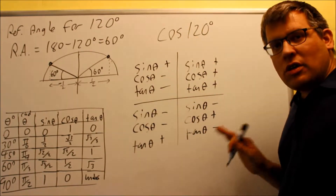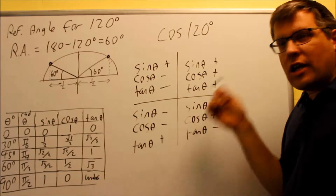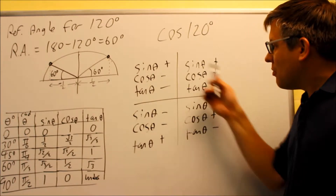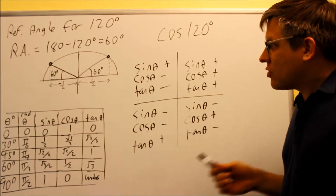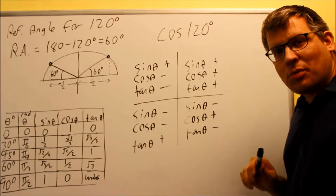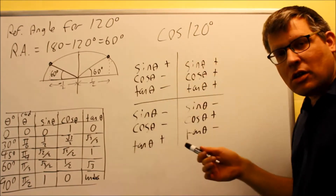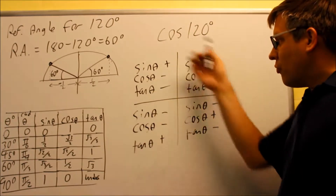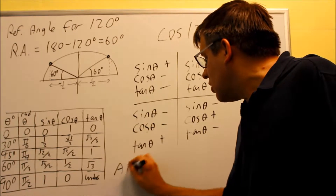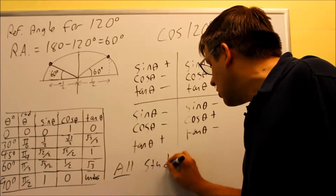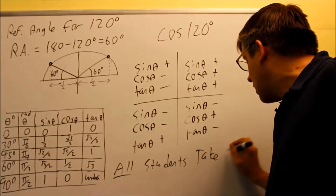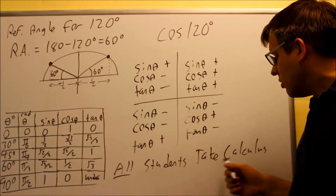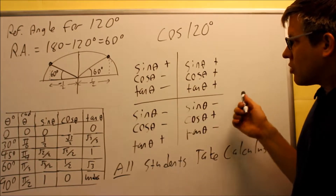So this is the sign chart we need. Instead of memorizing this sign chart, here's a mnemonic device you can use: All Students Take Calculus. Maybe that statement's not necessarily true all the time — not everybody takes calculus — but we're going to use this as a way to look at signs without memorizing the chart. It's a quick and easy way to tell what's positive and what's negative.